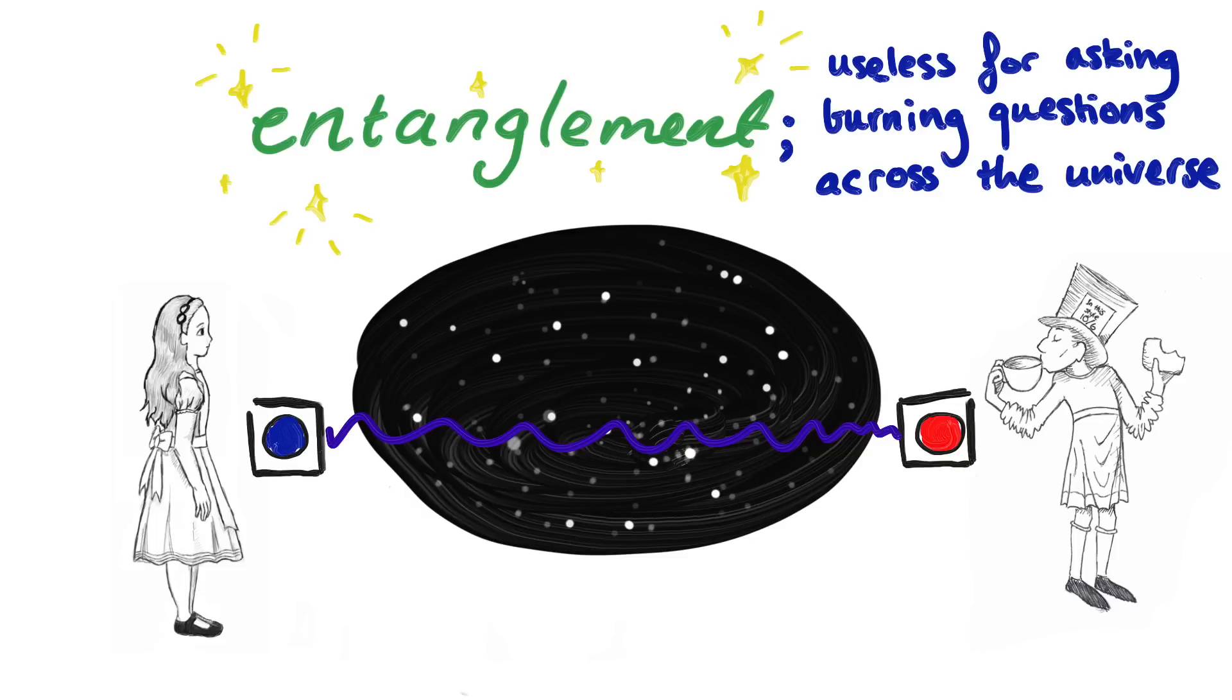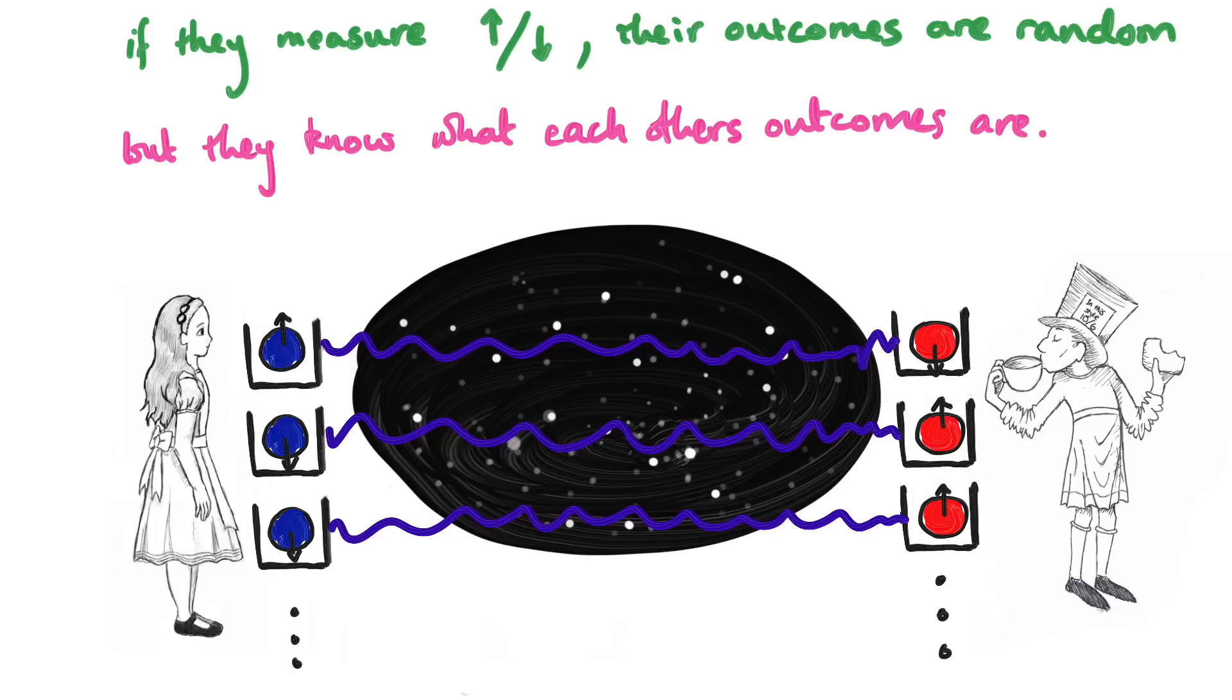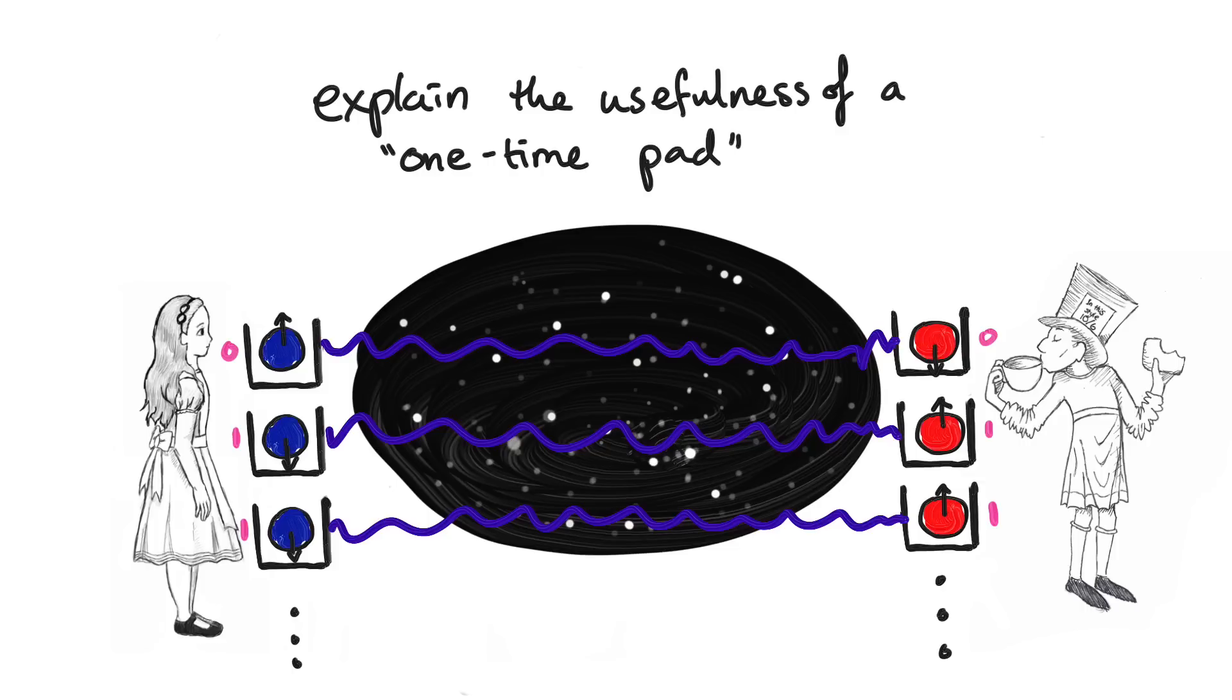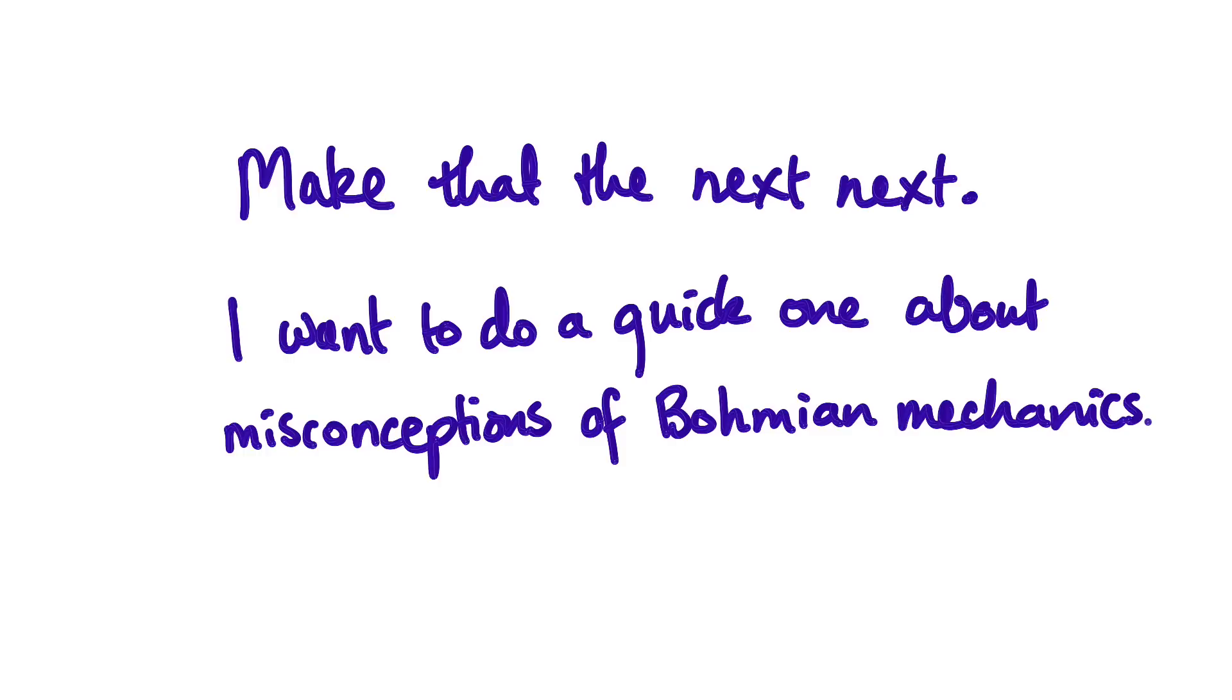So yes, entanglement is useless for faster than light communication. But can we try and use it for something else? Say Alice and Bob have lots of entangled particles between them. If they measure all of them, then the outcomes are random, but they know what the other person's outcome is. So now they share a string of random bits. Your second homework is to look up and explain the usefulness of something called a one-time pad. Also comment on whether or not an encryption based on a one-time pad coming from this setup is secure or not if they know that someone called Eve might be trying to intercept the particles. This is the topic for the next video. Meanwhile, thanks for watching.